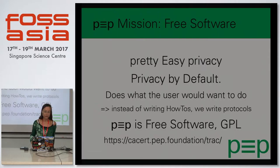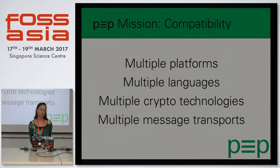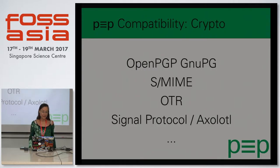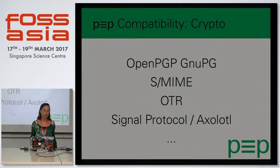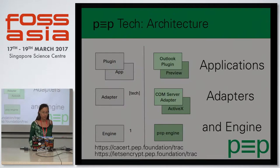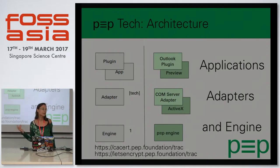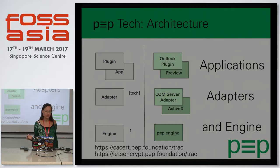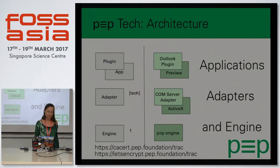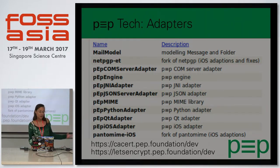PEP is free software under the GPL and it supports multiple platforms, multiple languages, multiple crypto technologies, and multiple message transports. For crypto, it already does OpenPGP, GnuPG, S/MIME, and it shall support OTR, the Signal protocol (Axolotl), and whatever comes in the future. The architecture has an engine providing all crypto functions and transport protocol knowledge, with adapters to plug into applications — available in Java, JSON, Python, Qt, iOS, and more.